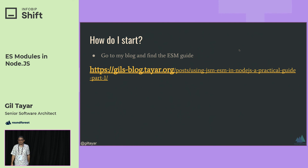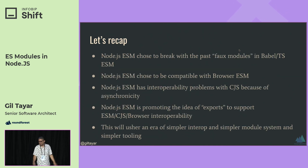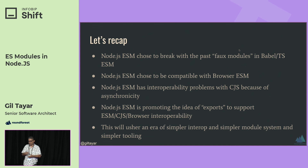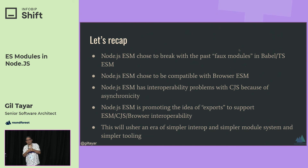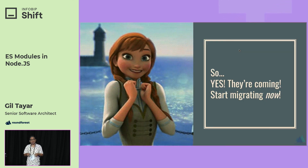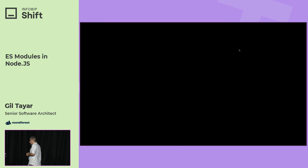How do I start? I have a migration guide on my blog — link at the last slide. To recap the whole thing: Node.js ESM chose to break with faux modules in Babel/TypeScript. It chose to be compatible with browsers. It has interoperability problems because it's async and CJS is sync. To solve this, it promotes 'exports' — a way to conditionally export based on where you're coming from. My guess is this will usher in an era of simpler tooling, and everybody will be very happy.